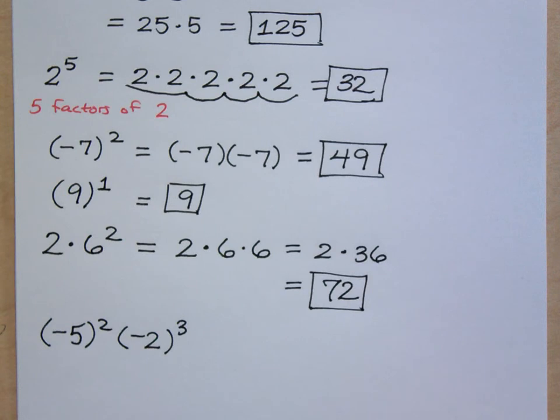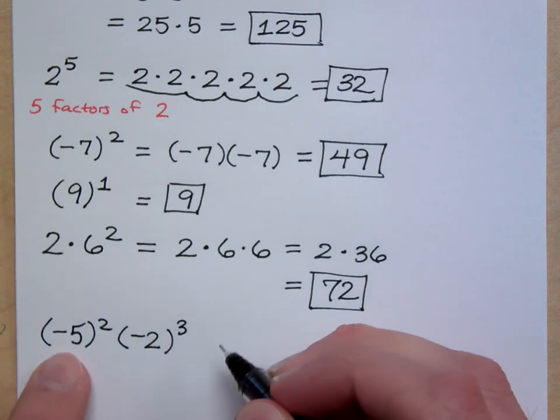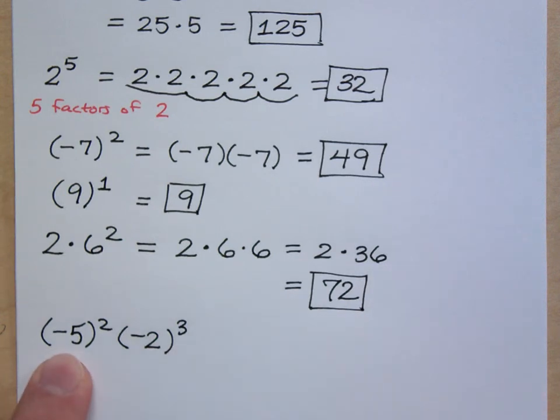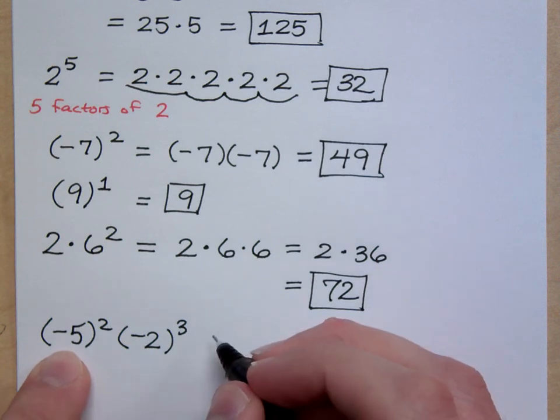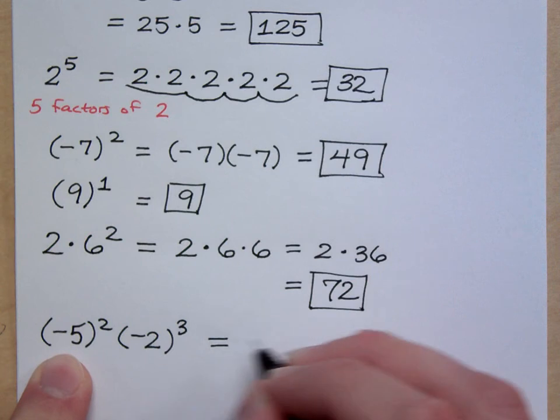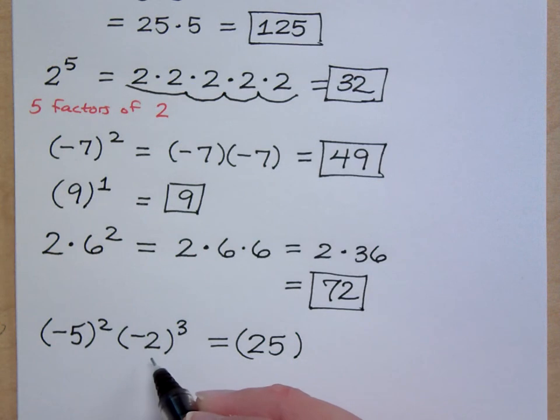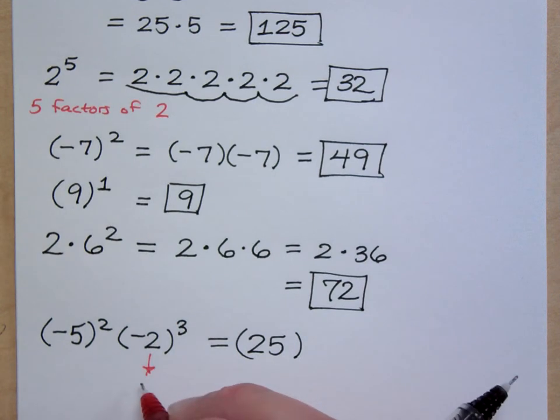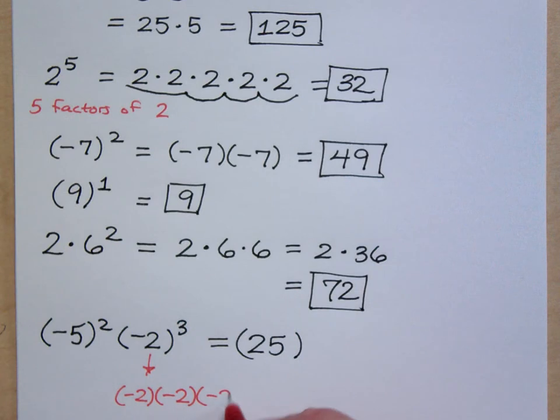Here I've got negative 5 squared. So this guy's going to give me positive 25, right? What about negative 2 to the third? It's what? Understand that this means negative 2 times negative 2 times negative 2. And what does that give me?